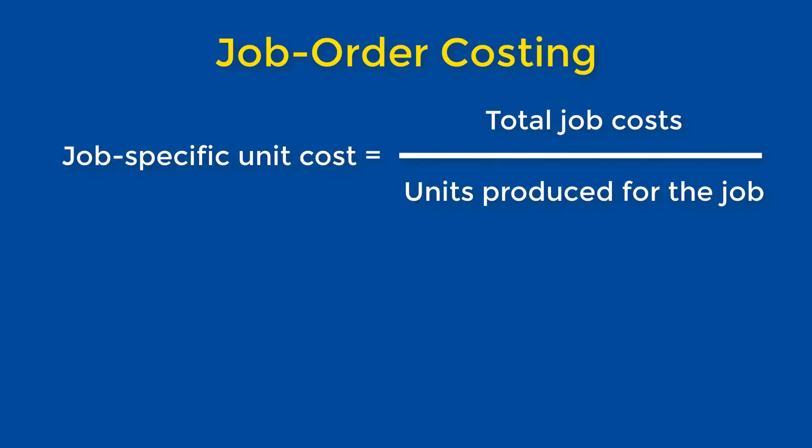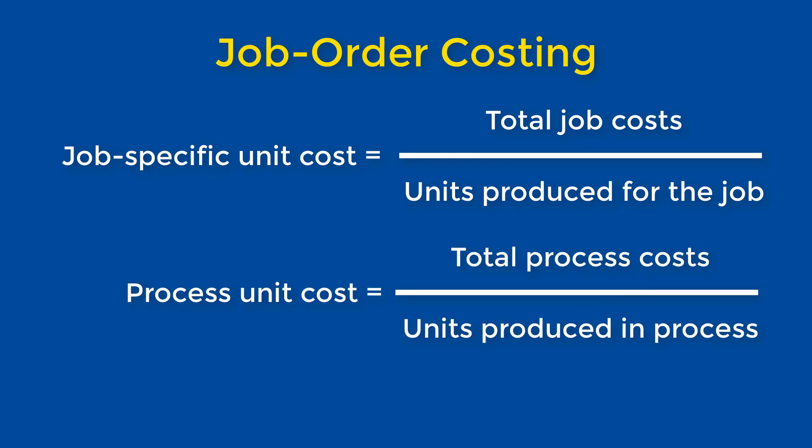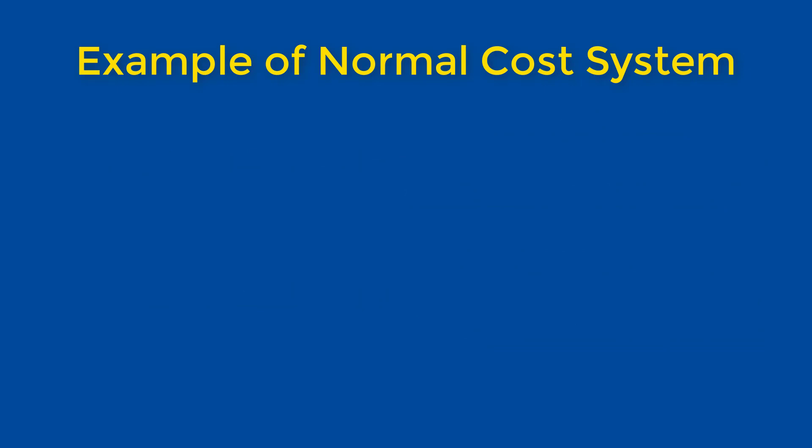Welcome back. In this video we will discuss job order costing. This formula is used by managers to determine the unit cost for a specific job, which helps them determine how much profit they made given what they priced. It only differs from this formula in regards to the scope of the variables. Let's begin by looking at an example of a normal job order cost system.